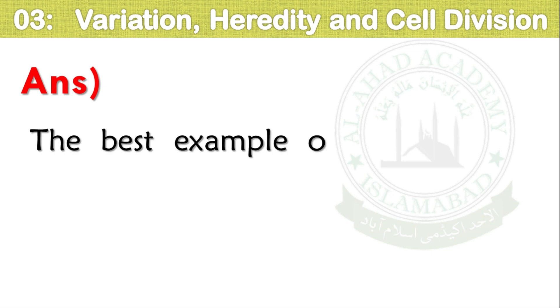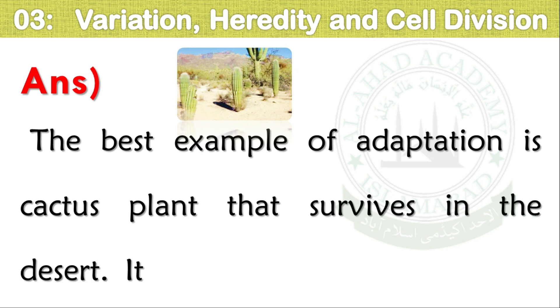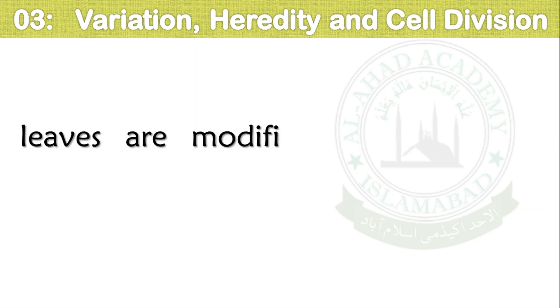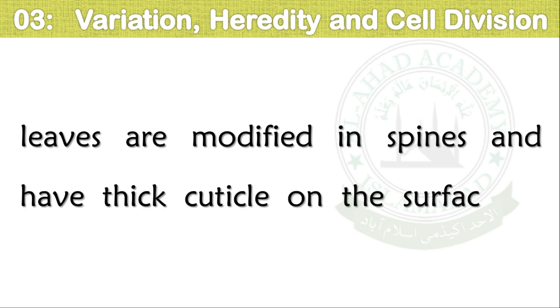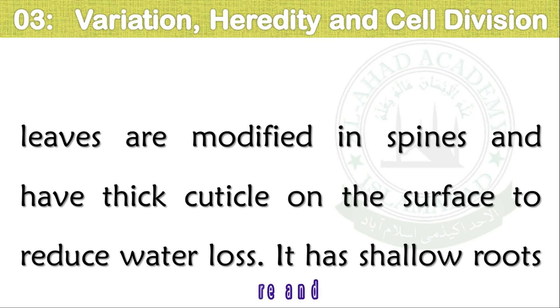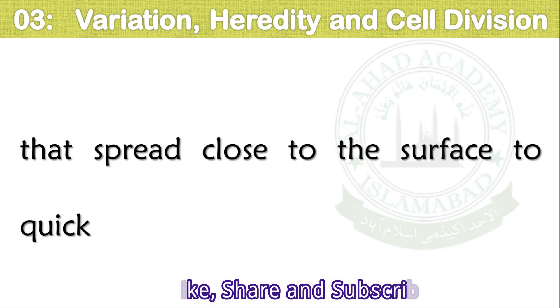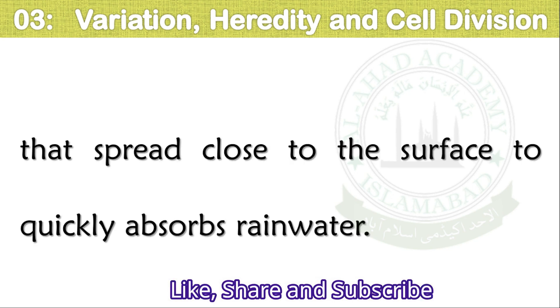The best example of adaptation is the cactus plant that survives in the desert. Its stems can store water. The leaves are modified into spines and have thick cuticle on the surface to reduce water loss. It has shallow roots that spread close to the surface to quickly absorb rainwater.